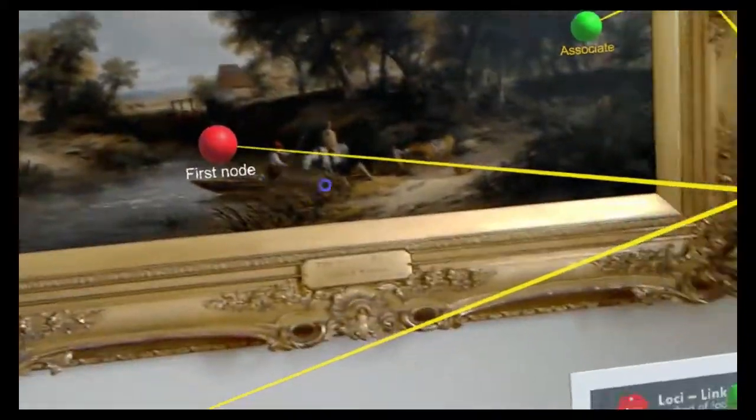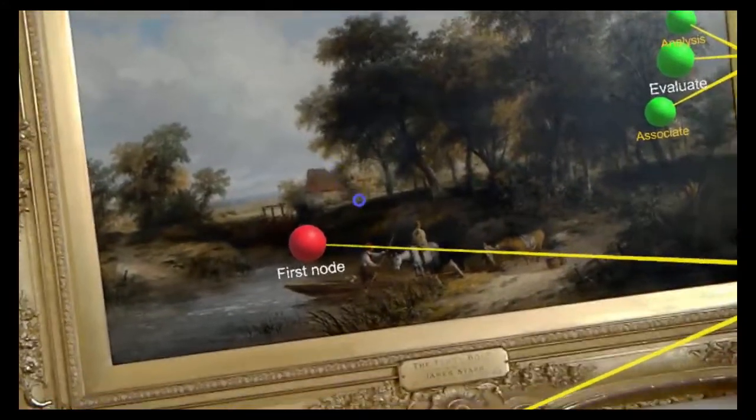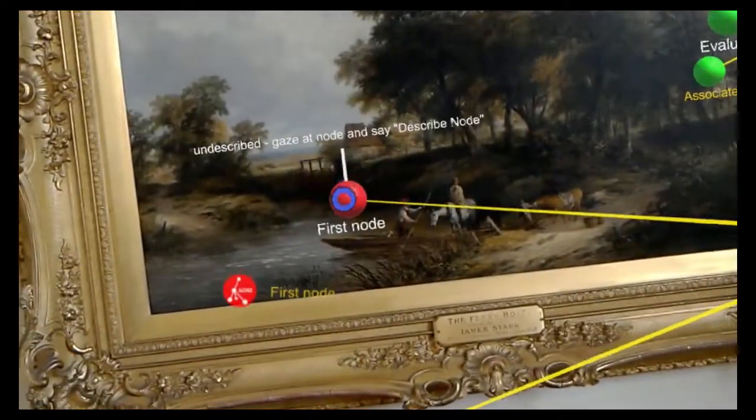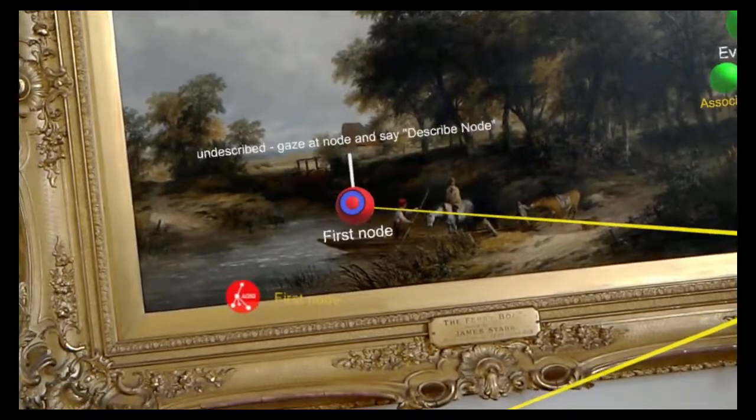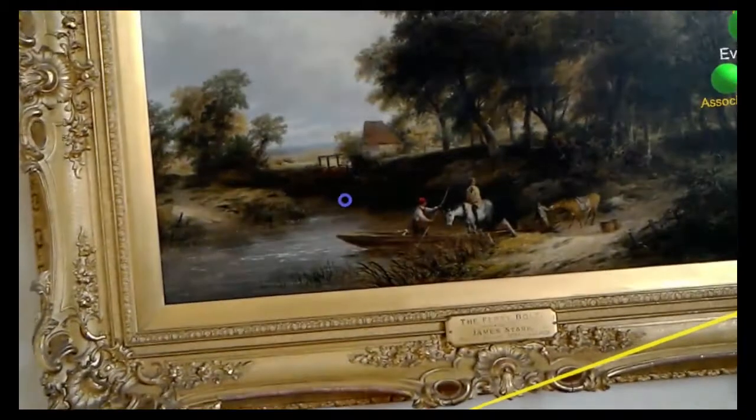And then also this is an editor, so you can do things like Undo and Redo. So we'll go ahead and say Delete Node. Undo.